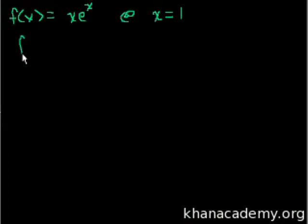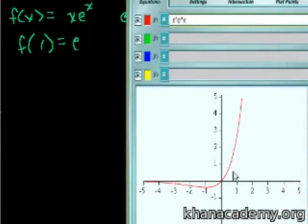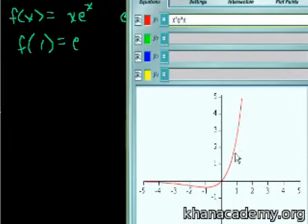Because f(1) is equal to 1 times e to the 1, so it equals e. So we're saying at the point (1, e) — so at the point 1, 2.71, whatever — that's this point right here, the point (1, e). So what we want to do is figure out the equation of the line tangent to this point.